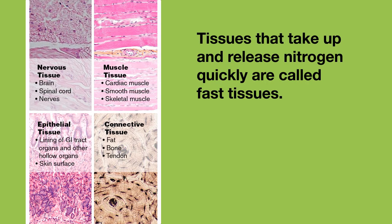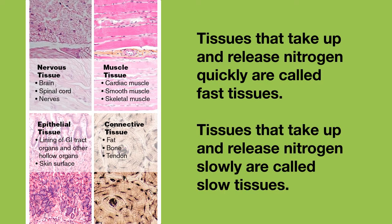Tissues that take up and release nitrogen quickly are called fast tissues, and tissues that take up and release nitrogen slowly are called slow tissues.